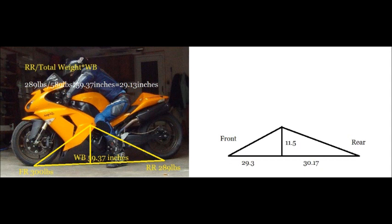So the two triangles: one triangle with sides of 29.3 inches and 11.5 inches, and the right triangle is 30.17 inches and 11.5 inches for two sides.